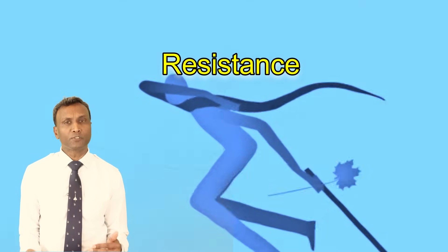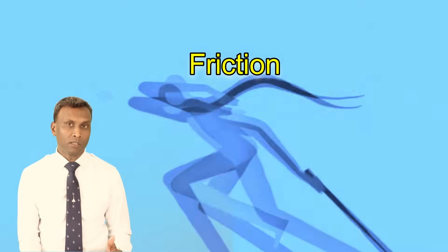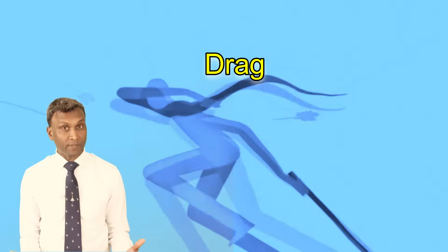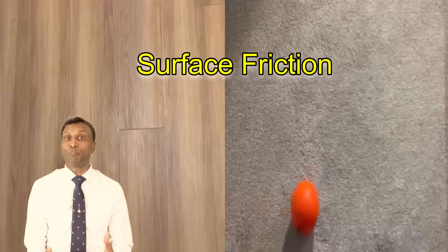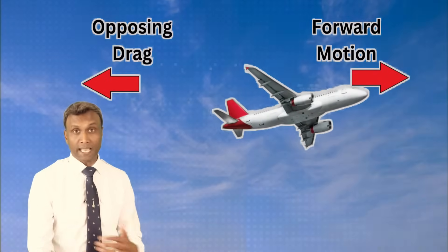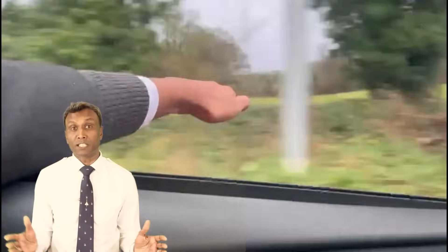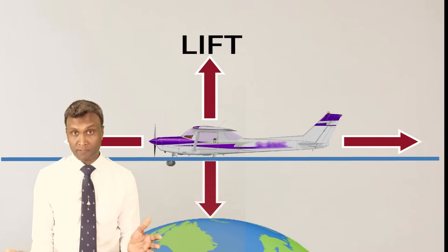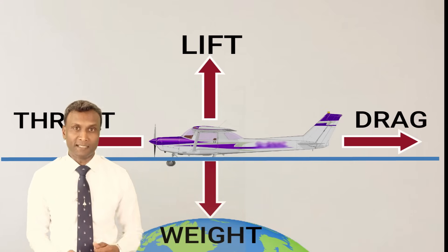Firstly, what is drag? Imagine walking against a strong wind — the resistance you feel from the wind is akin to what we call in aviation: drag, and it intensifies with speed. In simple terms, drag is the force that opposes an aircraft's forward motion through the air. It's like the resistance you feel when sticking your hand out of a moving car, but in aviation it plays a pivotal role in the four forces of flight: lift, weight, thrust, and of course drag.